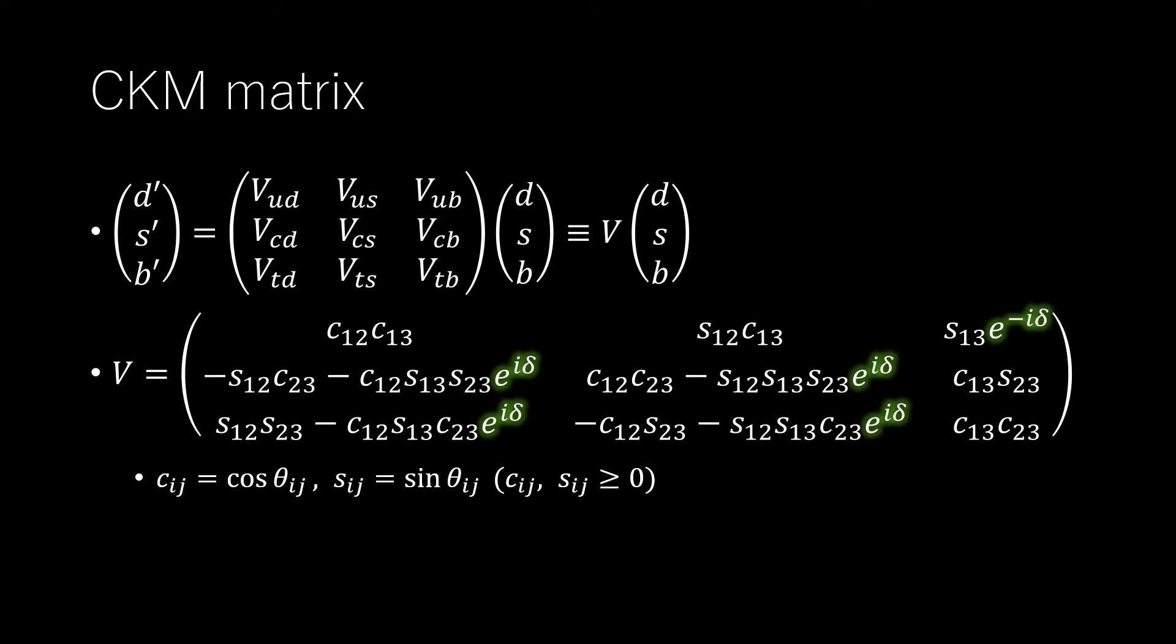This is in contrast to the general form of the mixing matrix for two generations only, which is purely real, so that CP violation could not arise from quark mixing if there were only two generations.